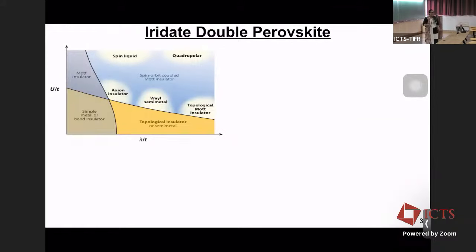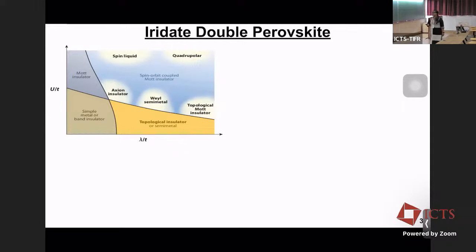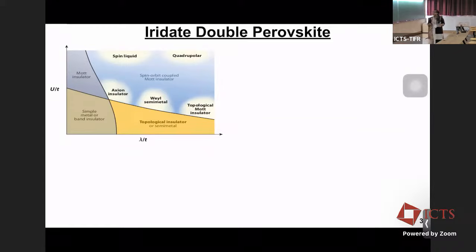Why are iridium double perovskites so fascinating? This is the phase diagram for a correlated system where I have the spin-orbit coupling strength lambda relative to the hopping term t on the positive x-axis, and electronic correlation U relative to t on the positive y-axis. In the first quadrant where both U and SOC are small we get a simple metal or band insulator. In the large U limit we have a Mott insulating phase, and in the large SOC limit we have a topological insulating phase. The most interesting region is the fourth quadrant where equal effects of U and SOC can be felt, hosting all these interesting phenomena — exemplified by what is known as a spin-orbit coupled Mott insulator.